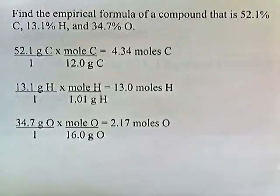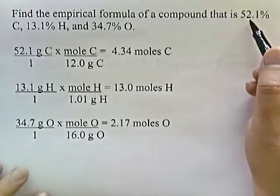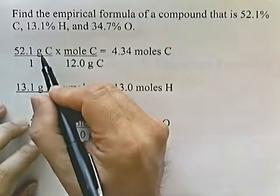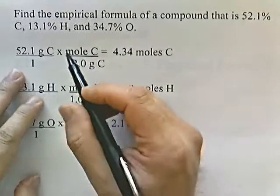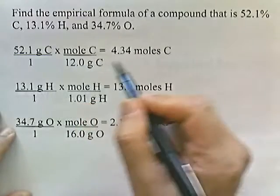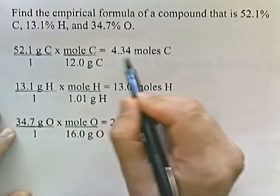One more problem. Find the empirical formula of a compound that's 52.1% carbon and 13.1% hydrogen and 34.7% oxygen. So 52.1 grams of carbon. And then we'll divide that by 12 to give us the moles of carbon, 4.34.